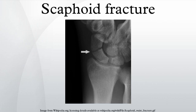Treatment: Treatment of scaphoid fractures is guided by the location of the fracture in the bone, displacement of the fracture, and patient tolerance for cast immobilization. Non-displaced or minimally displaced waist and distal fractures have a high rate of union with closed cast management.